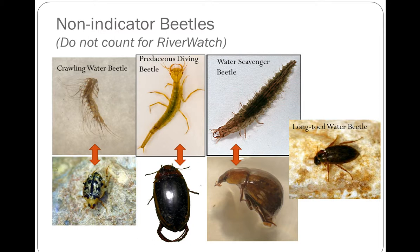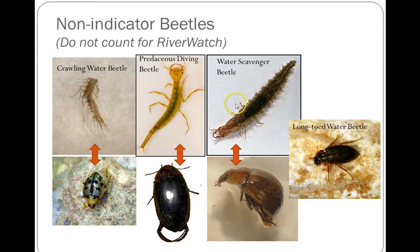We also have non-indicator beetles. There are other beetles out there, but we don't count them towards the Riverwatch Water Quality Index. You can note them in the notes section of your biological survey sheet, or just discard them back into the stream. There are several different kinds: the crawling water beetle larva is a very strange looking larva with a lot of filaments coming off its back, and the adult form also lives in the water. The predaceous diving beetle has almost a really thin tail and a really big head much wider than its thorax. The water scavenger beetle has jaws like the predaceous diving beetle, but the head is not much wider than the thorax and the tail doesn't get quite as skinny. There's also the long-toed water beetle. There are other beetles out there, but just mark them down as a non-indicator beetle in your notes.